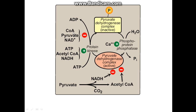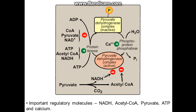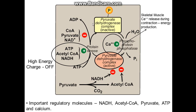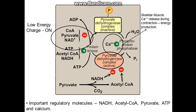However, protein kinase is slowed down by having free CoA, pyruvate, and NAD+. So in states where there is a lot of CoA, pyruvate, and NAD+, the complex will likely stay active, especially if calcium is also present. The important regulatory molecules are NADH, acetyl-CoA, pyruvate, ATP, and calcium 2+ ions. Skeletal muscle releases calcium ions during muscle contraction for energy production. During high-energy states, the complex becomes inactive with phosphate bound; at low energy, phosphate unbinds and the complex becomes active.